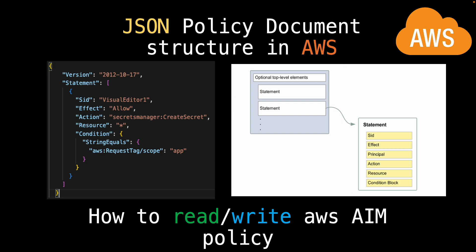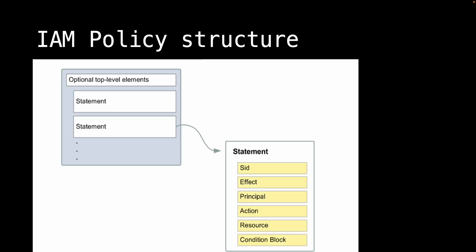In this video we are going to learn how to read and write AWS IAM policy. This is the IAM policy structure which contains optional top-level elements and multiple statements. Each statement contains sub-level elements: SID, Effect, Principal, Action, Resource, and the Condition block.